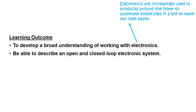We also need to be able to describe an open and closed loop electronic system. These are the two main electronic systems used, and they are quite simple to differentiate. An open system is a very simple, basic system that sends a signal to do something — for example, turning on a light: flick the switch, the light comes on, and that's it.